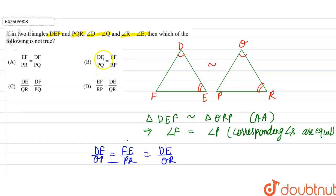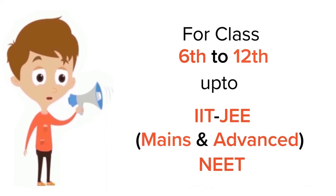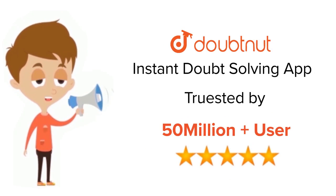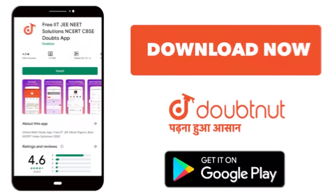Now DE upon PQ, there is no option like DE upon PQ. As DE upon QR is equal to EF upon PR, we can say that option B is not true. So the correct option will be option B. For class 6-12 IIT and NEET level, trusted by more than 5 crore students, download Doubtnit app today.